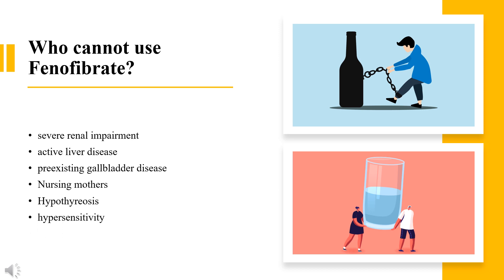Fenofibrate is contraindicated in patients with severe renal impairment, including those receiving dialysis, due to a 2.7-fold increase in exposure and increased accumulation during chronic dosing in patients with estimated glomerular filtration rate less than 30 mL/min. It is also contraindicated in patients with active liver disease, including those with primary biliary cirrhosis and unexplained persistent liver function test abnormalities, and in patients with pre-existing gallbladder disease.